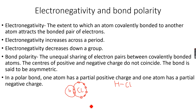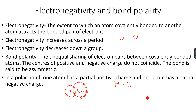Now there is something called electronegativity. Electronegativity is the extent to which an atom covalently bonded to another atom attracts the bonded pairs of electrons. The bonded pairs of electrons are not always equally shared between two covalently bonded atoms. For example, if chlorine is bonded to another chlorine, they are equally shared because it's the same atom. However, if you have hydrogen bonded to chlorine, the bonded pair of electrons is not equally shared because of the difference in electronegativities.